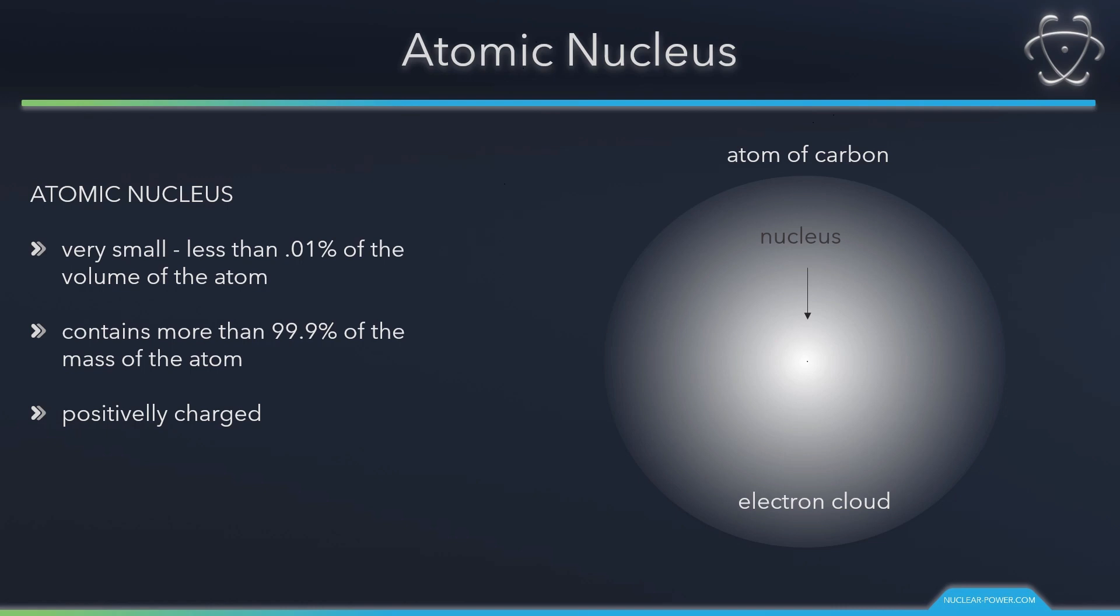The atomic nucleus is represented by the tiny point in the middle of the electron cloud. Most of the nuclear transformations are not affected by the existence of its electron cloud. Electron capture is an exception. The atomic nucleus is so small compared to the atom itself that it must be magnified many times in all illustrations.